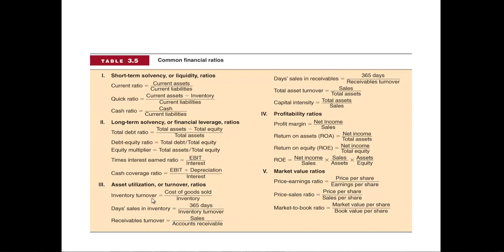The third category is asset utilization or turnover ratios, sometimes referred to as efficiency ratios. How good a job does the firm do of moving its inventory? Inventory turnover, defined as cost of goods sold divided by inventory, tells us how many times you fill up the warehouse and empty it out. An inventory turnover of one means you fill up the warehouse and it takes essentially a whole year to empty it out. A turnover of two means you do that twice.